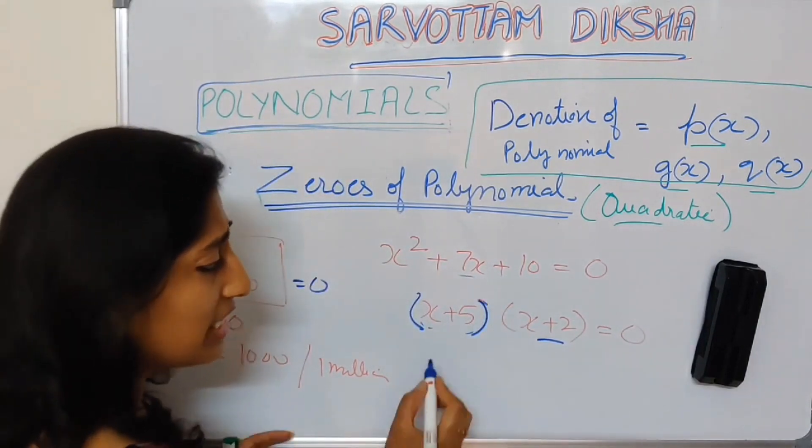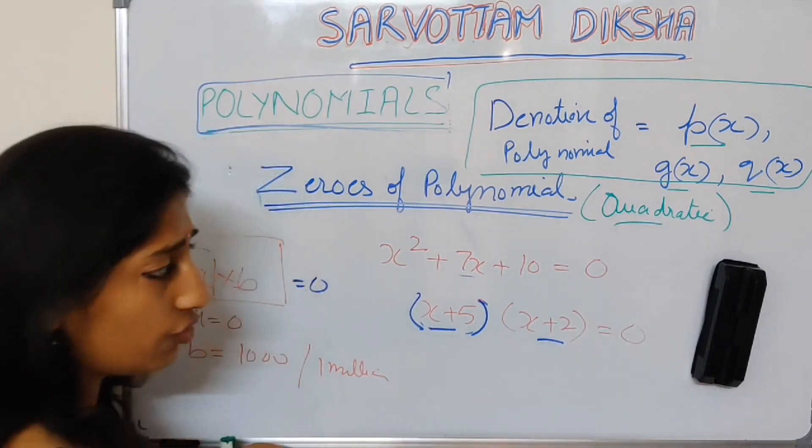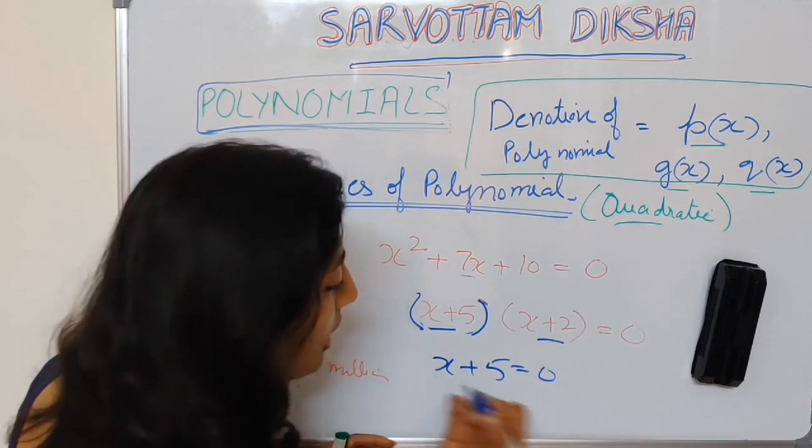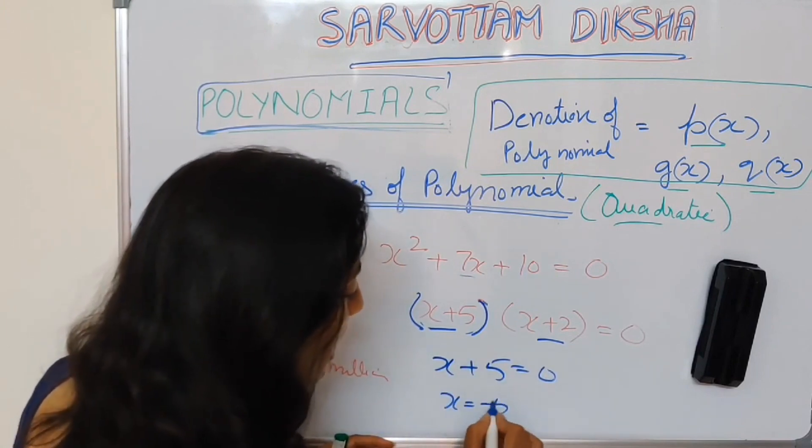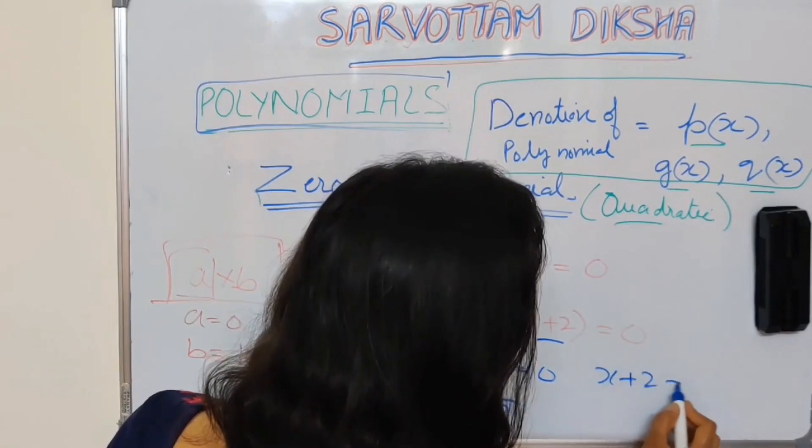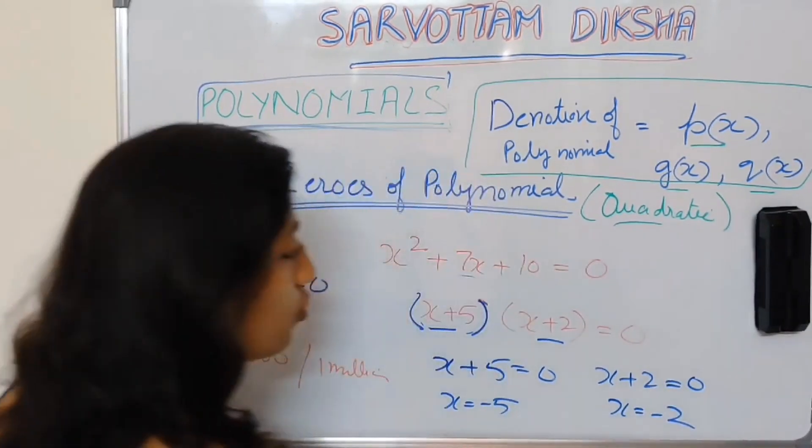See what I will get to find 0 of these linear factors individually: let me put x plus 5 equal to 0, that is x equals minus 5, and 0 of x plus 2 is x equals minus 2.